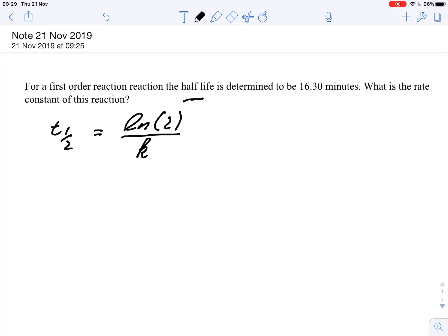All we need to do is rearrange this equation so k goes on this side, t goes on this side, and we get k, the rate constant, equals ln 2, natural logarithm, divided by the half-life, in this case 16.3 minutes.